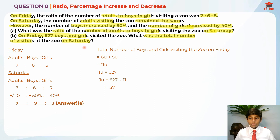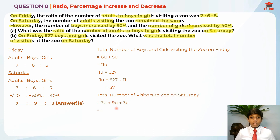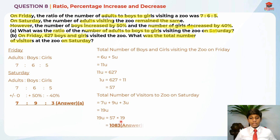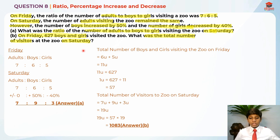We need to find the total number of visitors at the zoo on Saturday, which is seven units plus nine units plus three units, equal to nineteen units. We already found one unit equals 57, so 19 units is 57 times 19, which is 1083 — the answer for part B. I hope you understood my explanation for question 8 parts A and B. Thank you and bye bye, I'll see you in my next video.